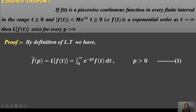If f(t) is a piecewise continuous function in every finite interval in the range t ≥ 0, and f(t) is bounded by the form M·e^(αt) for t ≥ 0 — that is, f(t) is of exponential order as t tends to infinity — then the Laplace transform of f(t) exists for every p > α.